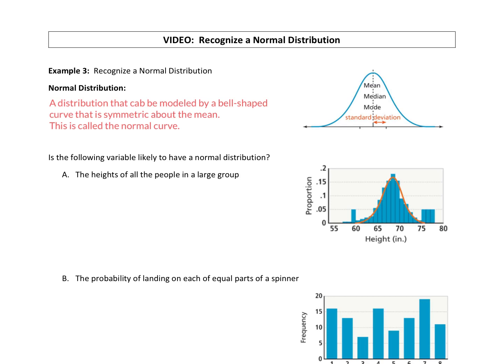All right, so we're going to learn about a pretty big idea in statistics, something called a normal distribution and the normal curve. A normal distribution is a distribution that can be modeled by a bell-shaped curve that is symmetric about the mean. This is called the normal curve.